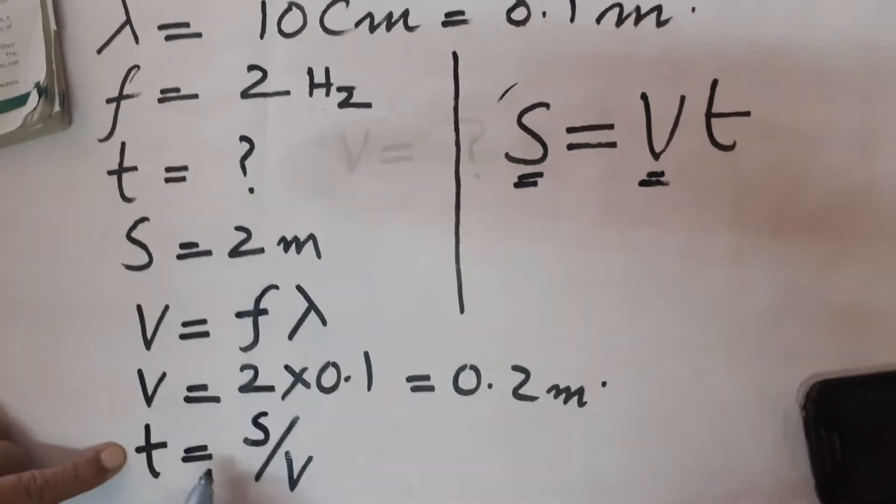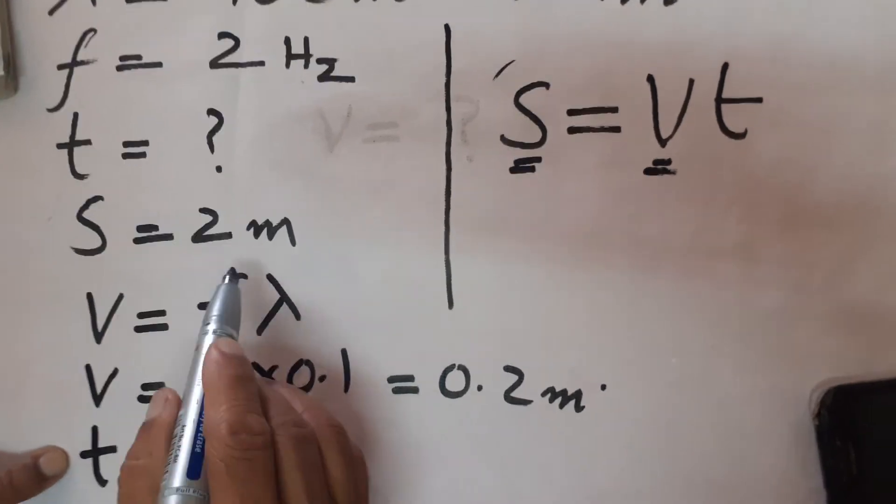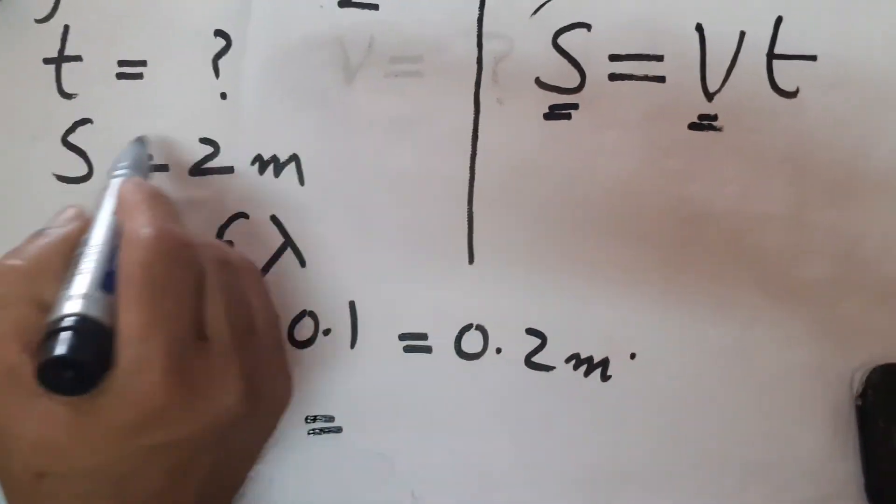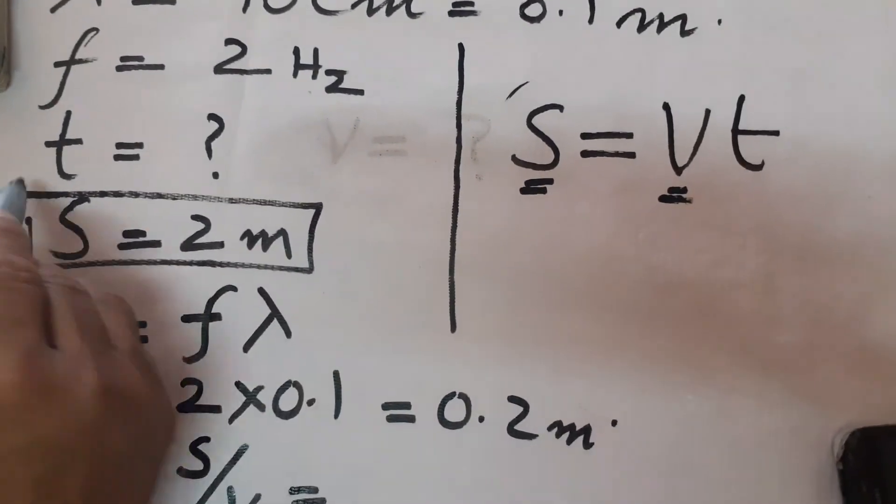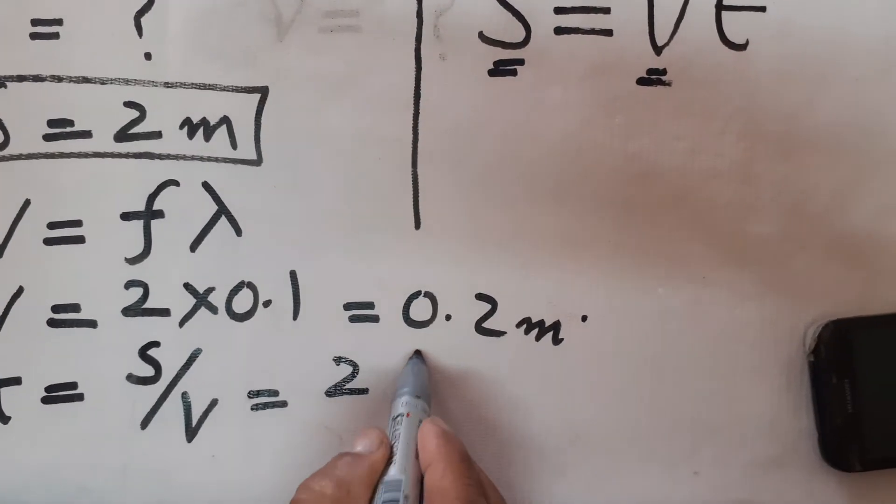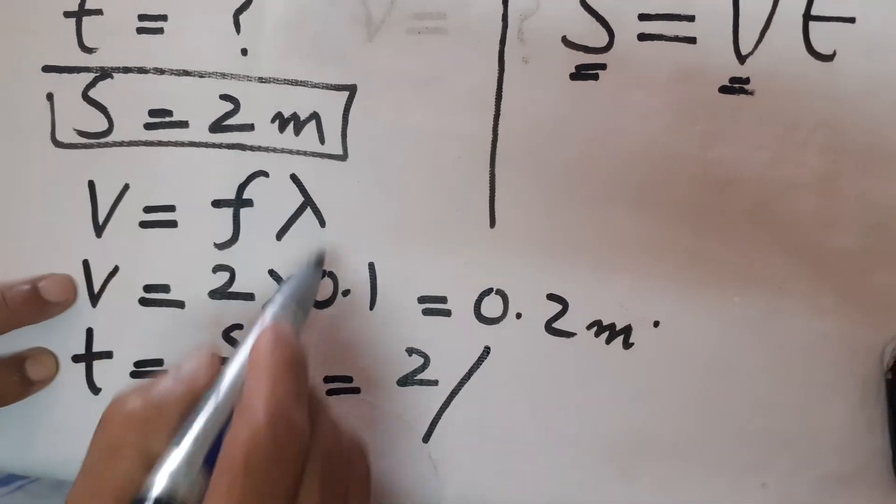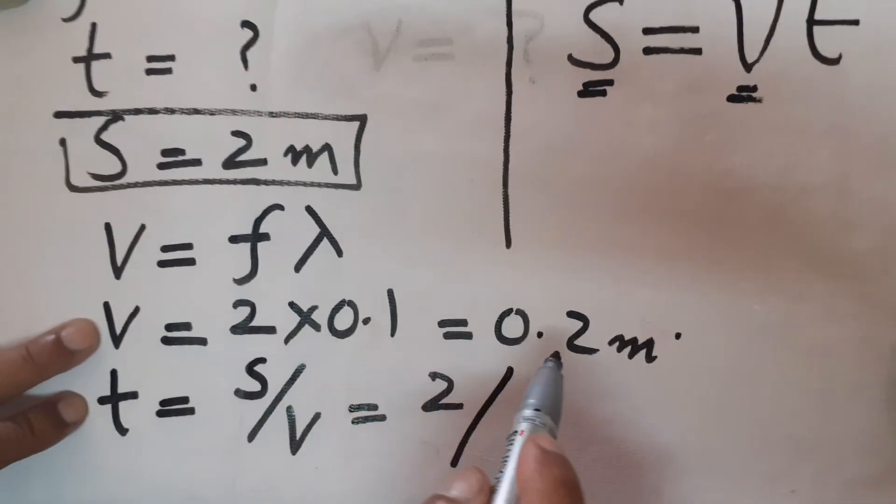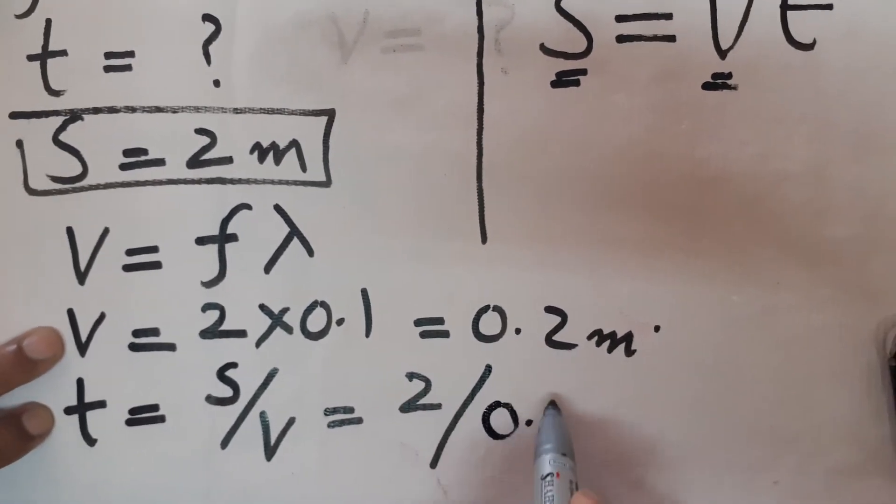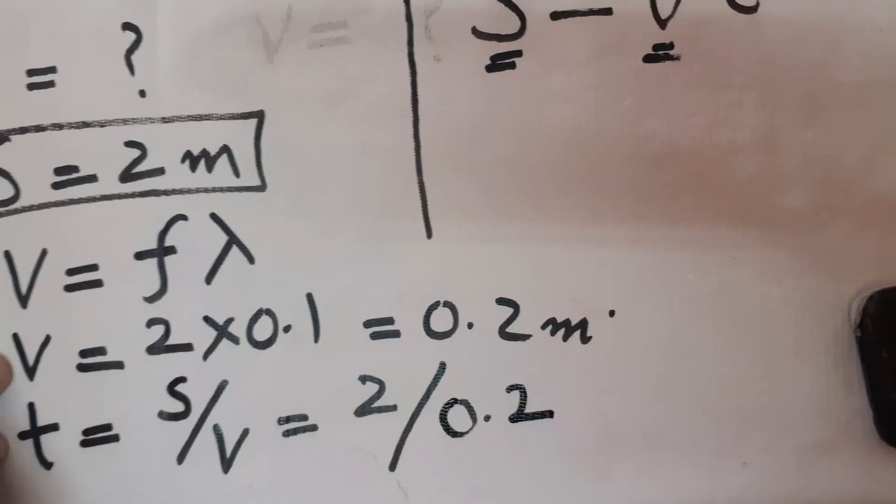s is equal to 2 meters, and v we found using the formula is equal to 0.2 meters per second.